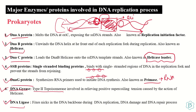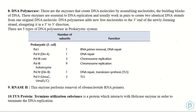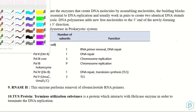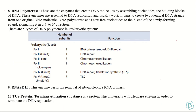Next is the DNA ligase enzyme. DNA ligase fixes the nicks that are formed during replication. Every time primers are added on the leading or lagging strand and subsequently removed, they leave behind nicks. To fix those nicks, DNA ligase plays an important role.